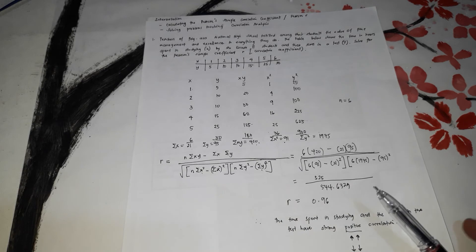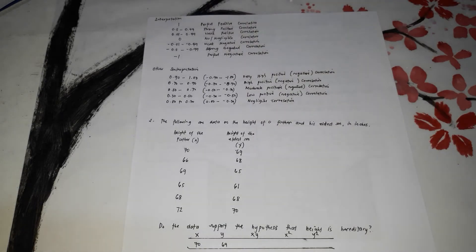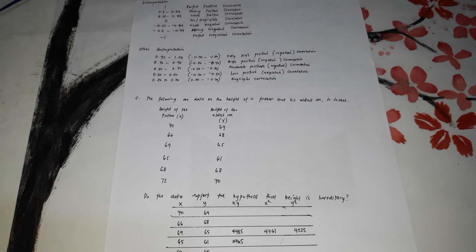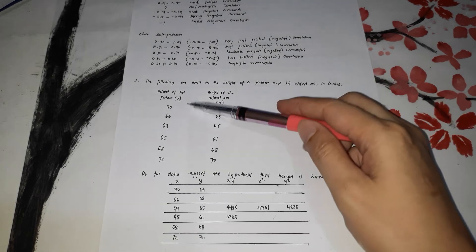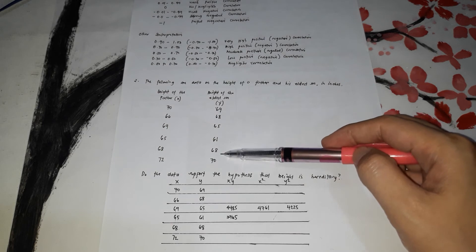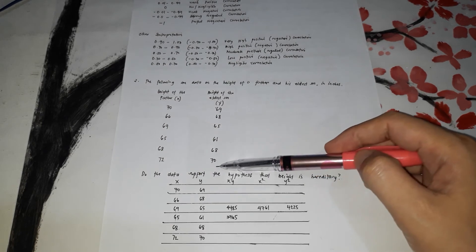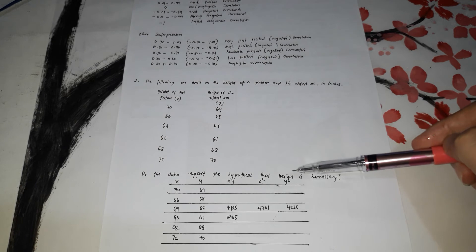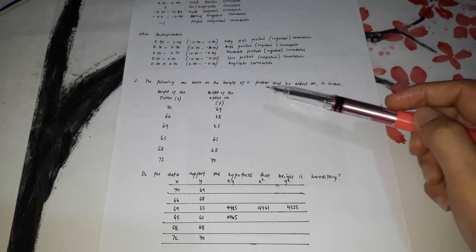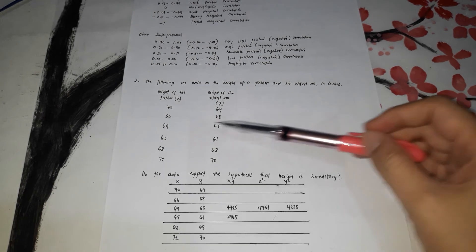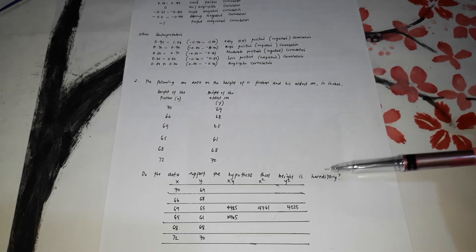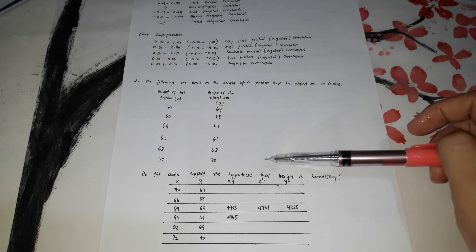Next, example number two. The following data are data on the height of a father and his eldest son. This is the height of the father and this is the height of the son. We're going to find out if the data support the hypothesis that height is hereditary — meaning we find out if they have correlation.